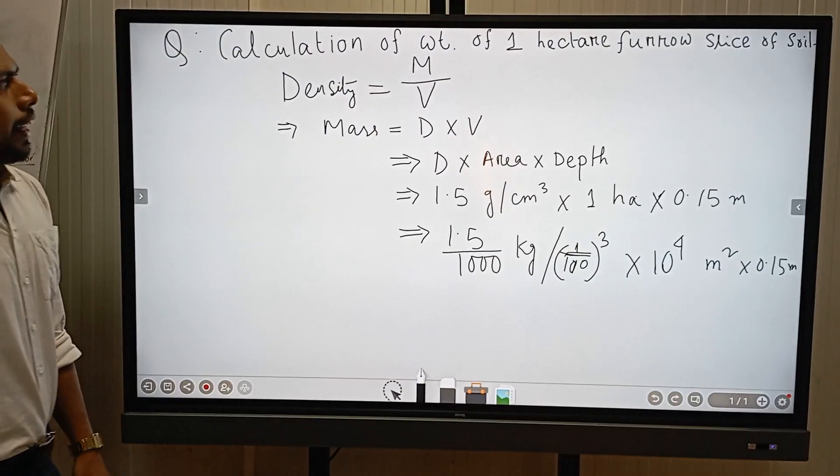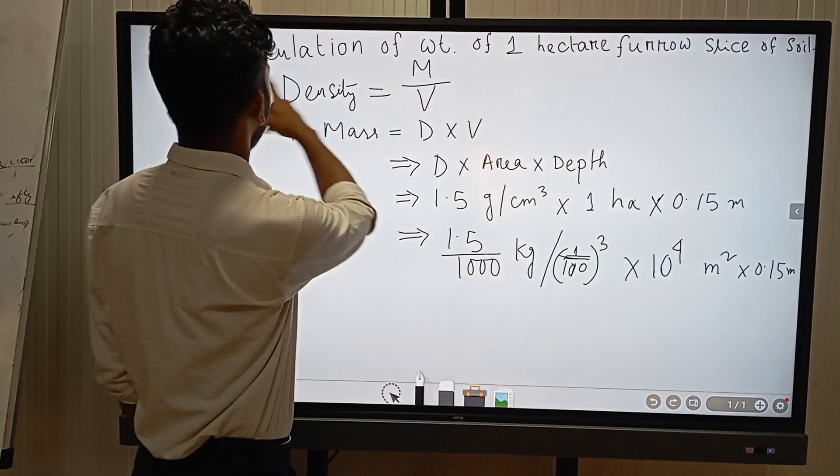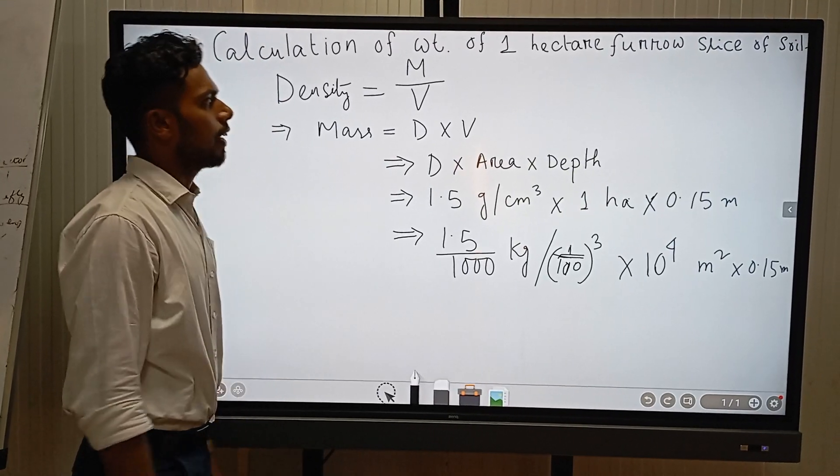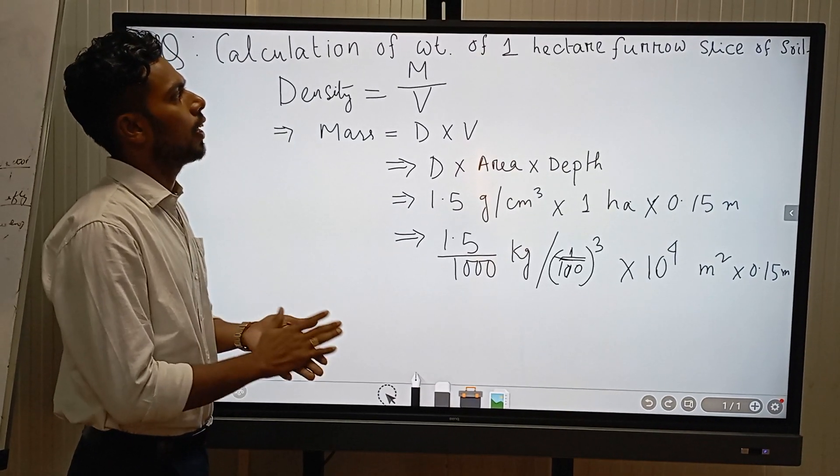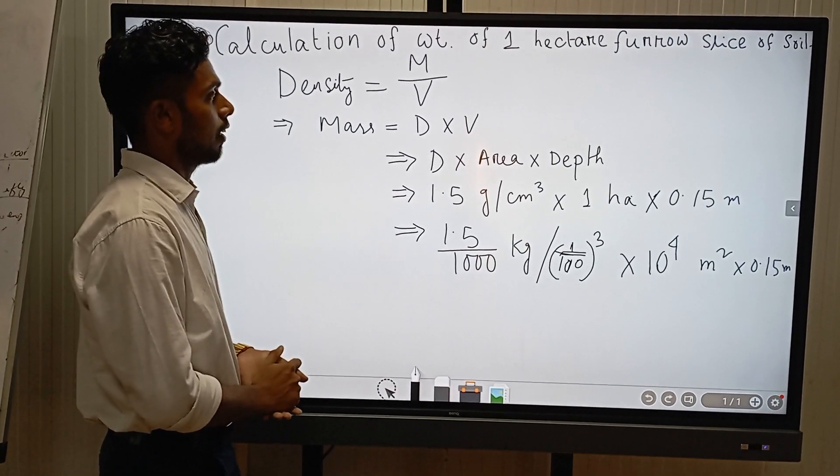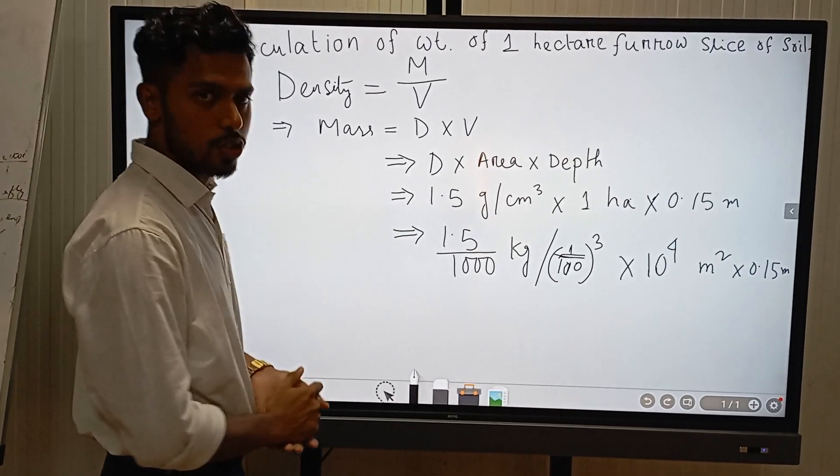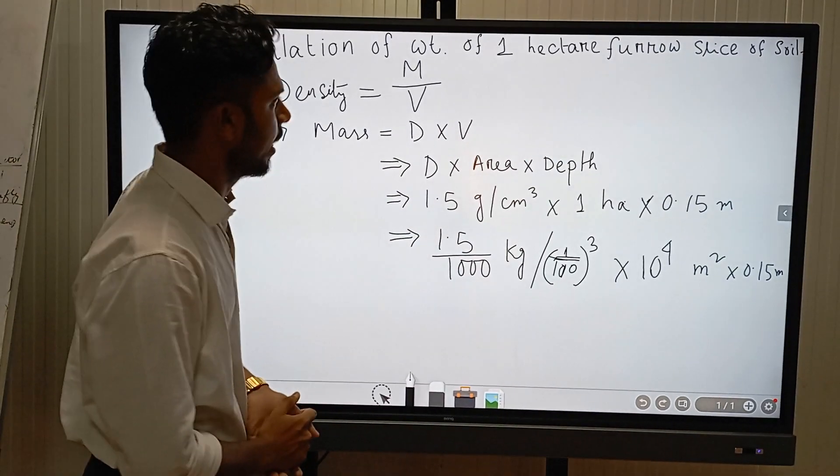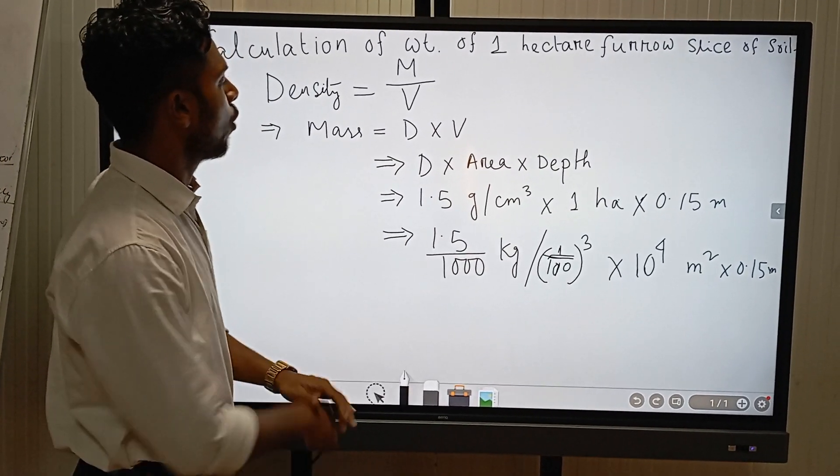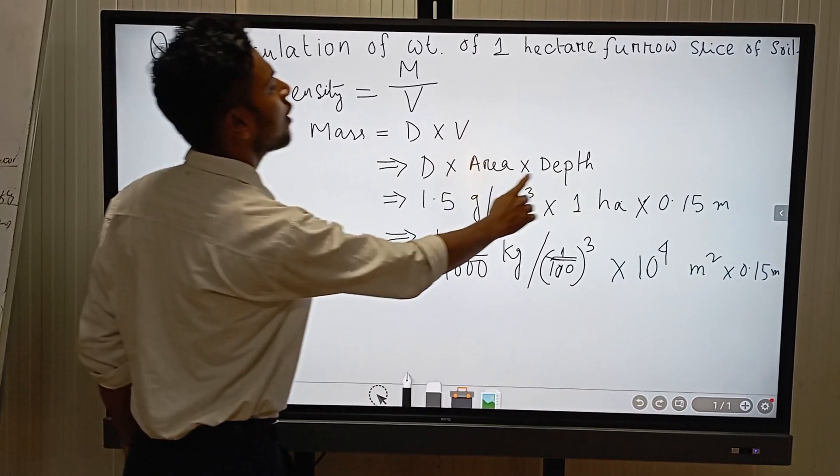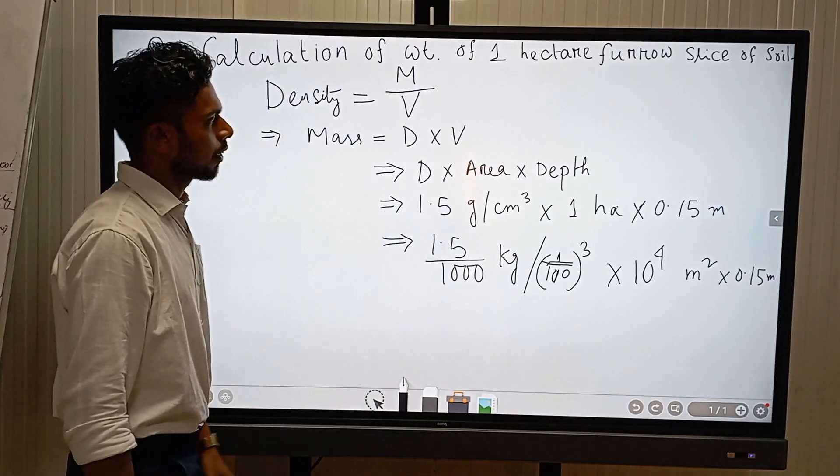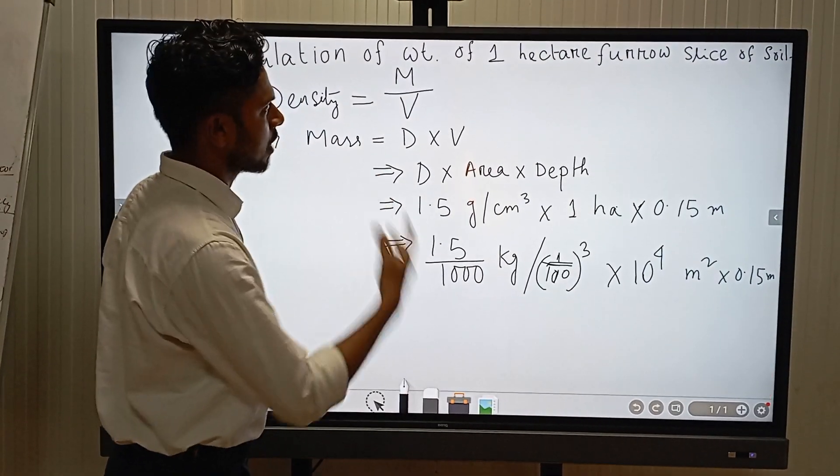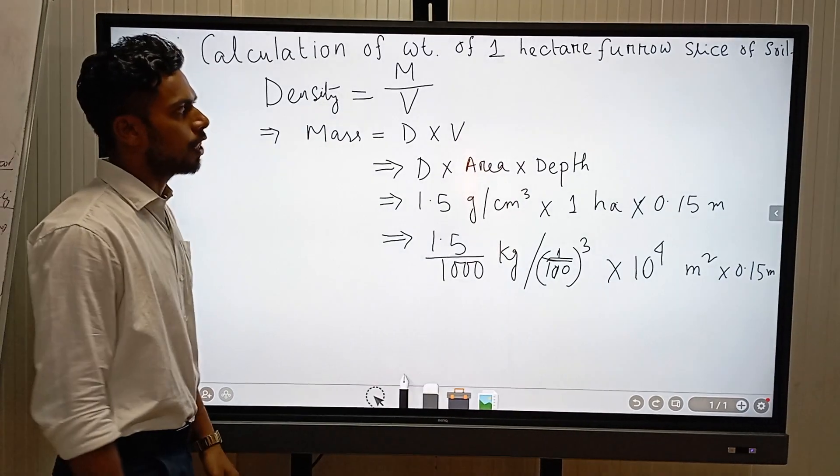From the question, it is given that the area of soil is one hectare. As we know, one hectare is equal to 10 to the power 4 square meters. Volume is equal to area times depth, so in furrow slice, 0 to 15 cm depth of soil.